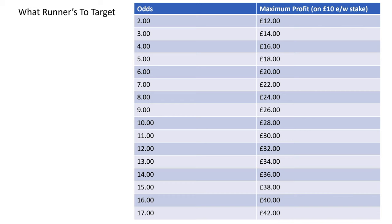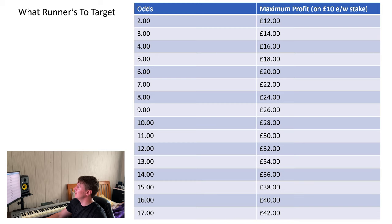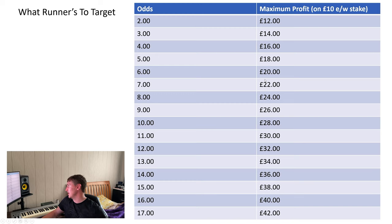Here I've brought up all the different odds ranges from 2 down to 17 and the maximum profit you can make on a £10 each-way stake. At odds of 2 the maximum profit is £12; at odds of 3 it's £14; at odds of 4 it's £16; at odds of 5 it's £18 — it goes up in twos all the way to £42 maximum profit at odds of 17.